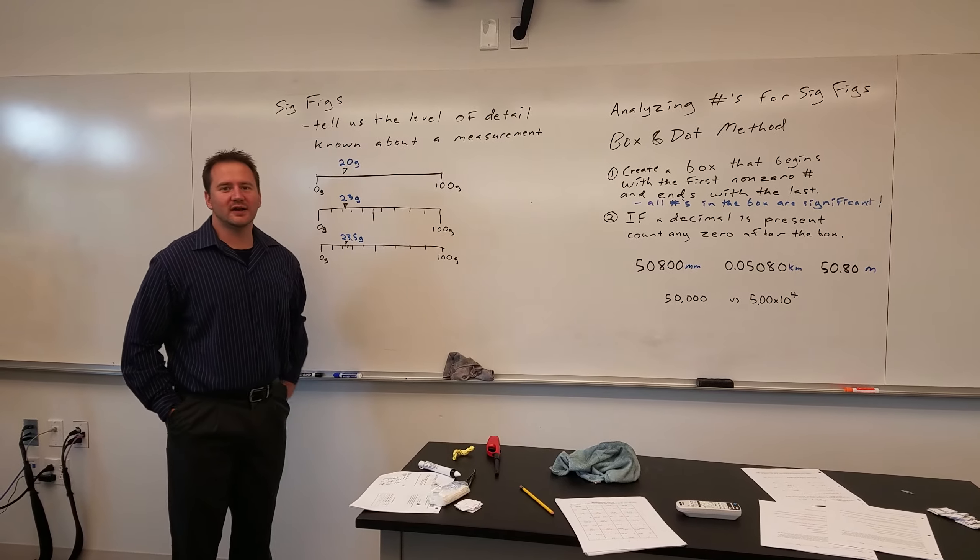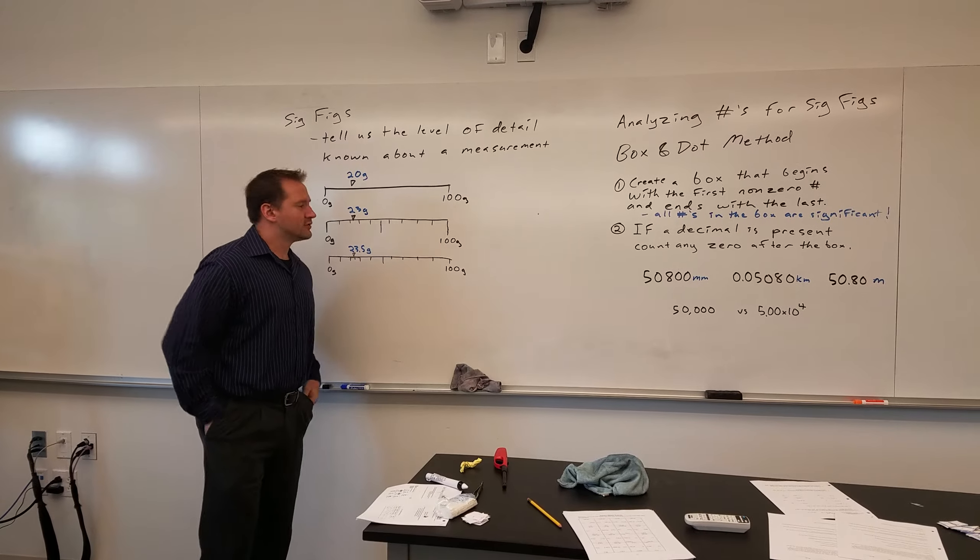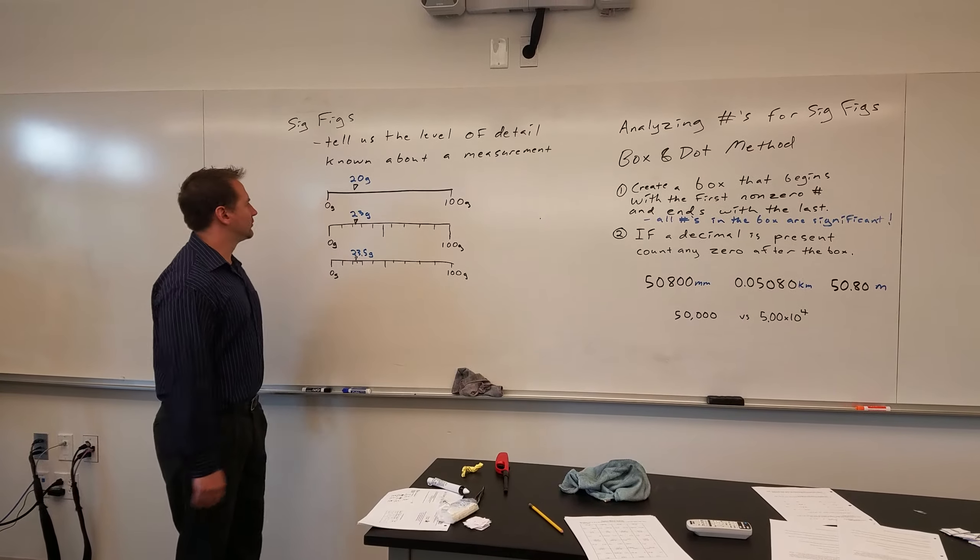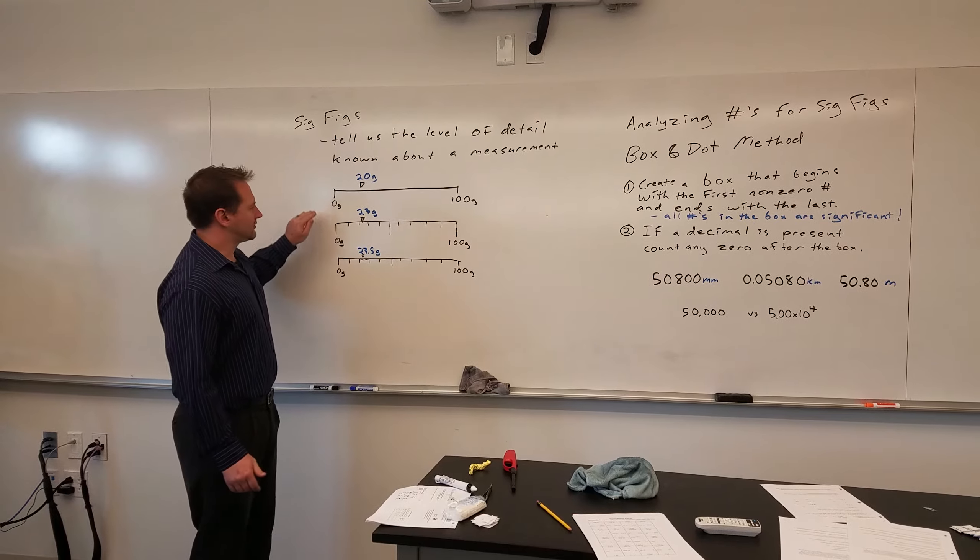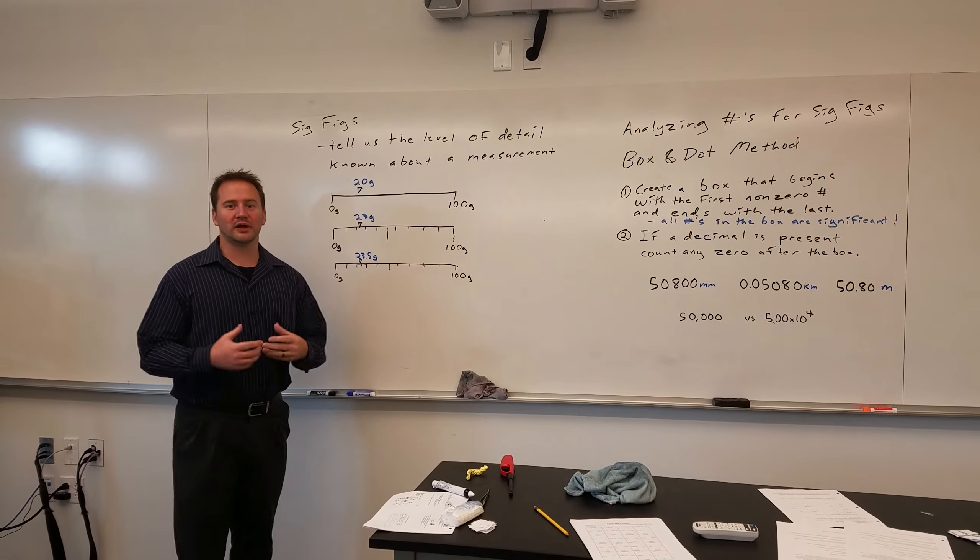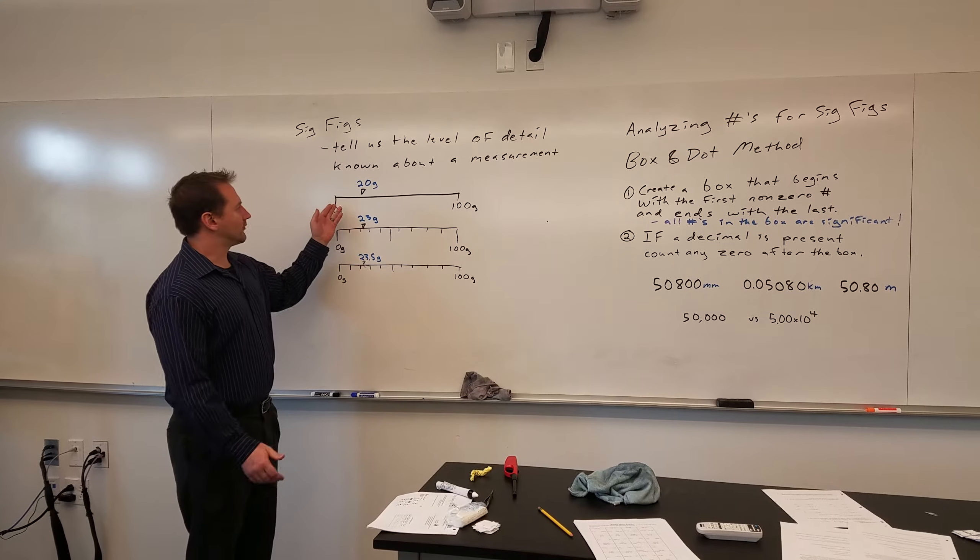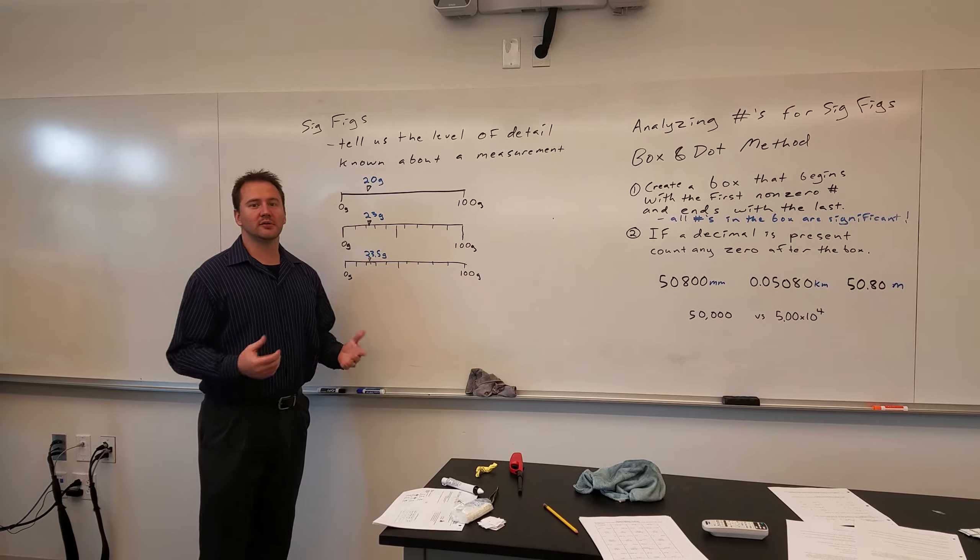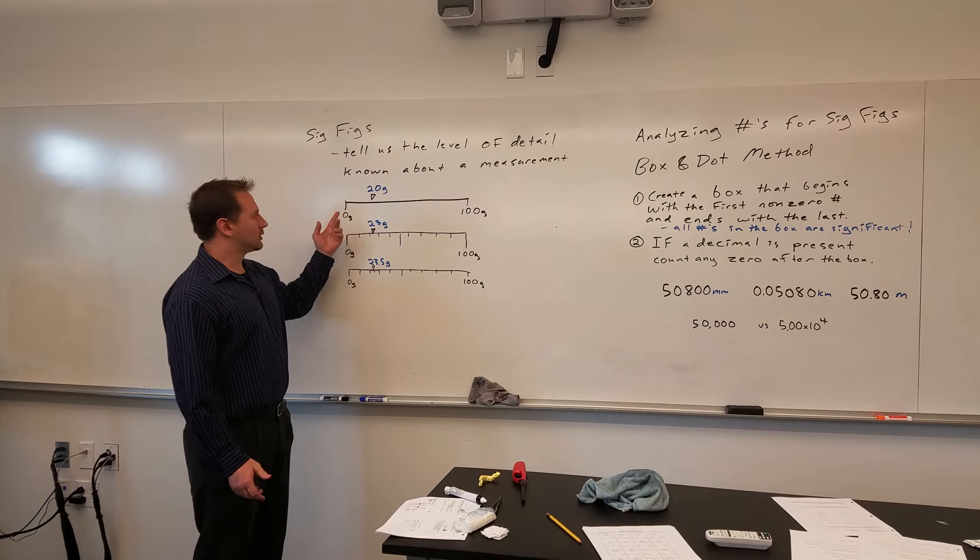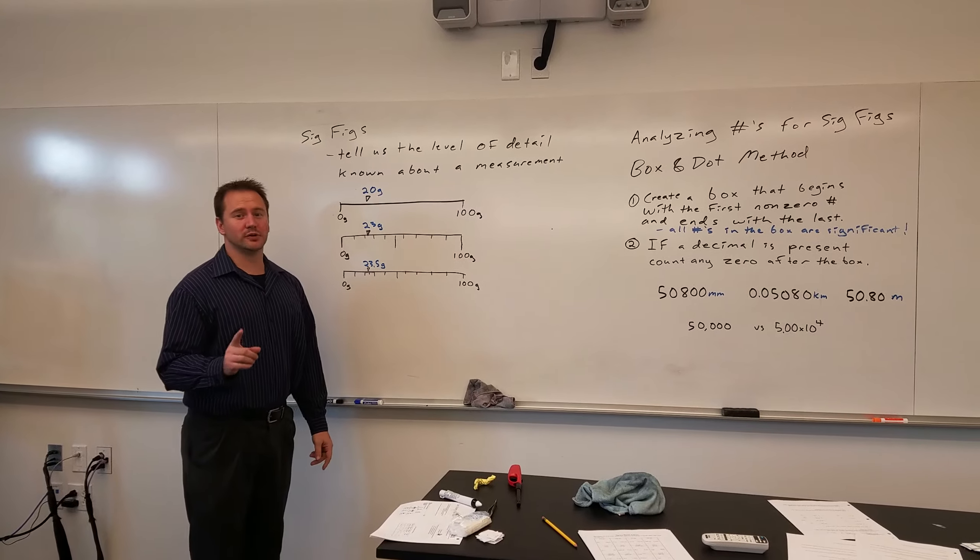What they do is they tell us the level of detail with which we know a measurement. So to put that in perspective, what that means, with these three different balances I'm weighing the same object. With the first balance there's not much detail that can be given in the answer. So you can only approximate one digit when you're recording a measurement.